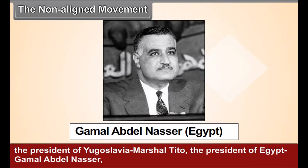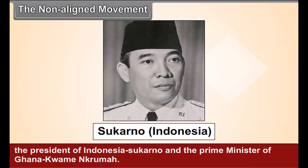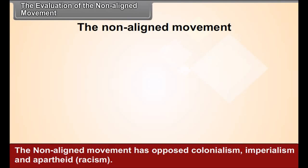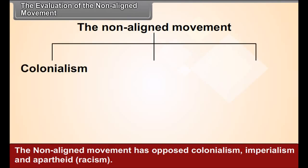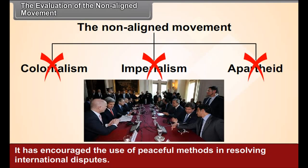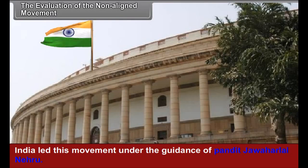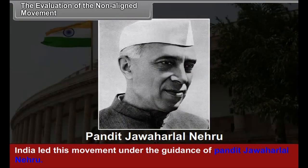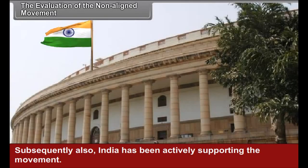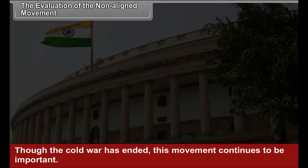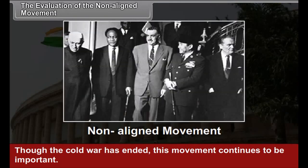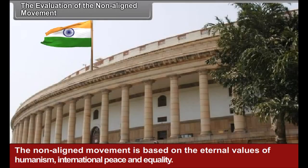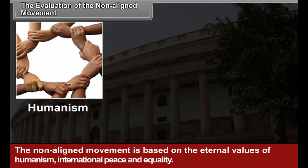The Non-Aligned Movement: After the Second World War, the newly emerging independent countries in Asia and Africa supported the idea of non-alignment, and it became an important movement. This movement started in 1961 under the leadership of the first Prime Minister of India, Pandit Jawaharlal Nehru; the President of Yugoslavia, Marshal Tito; the President of Egypt, Gamal Abdel Nasser; the President of Indonesia, Sukarno; and the Prime Minister of Ghana, Kwame Nkrumah.